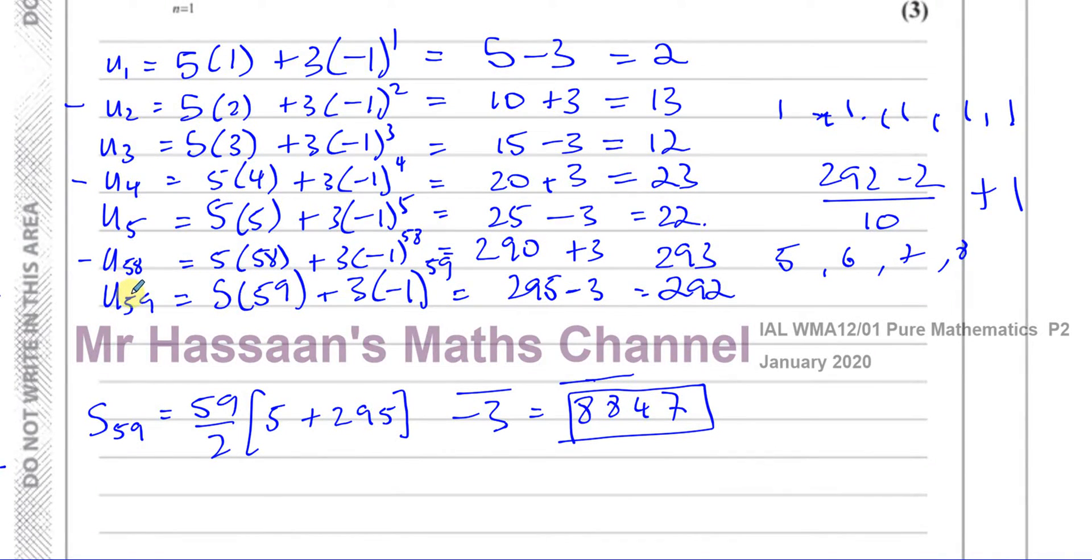8847. So we got to the same answer with a lot less hassle because here we know there's 59 terms right away and we can use the formula S_n equals n over 2 times a plus l.